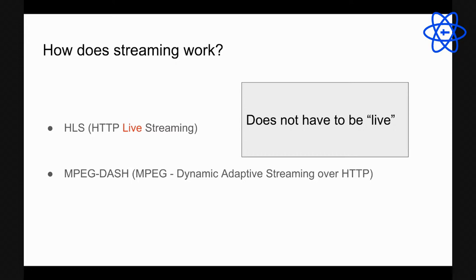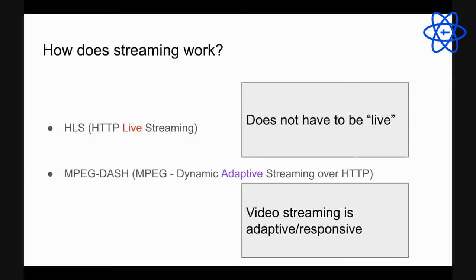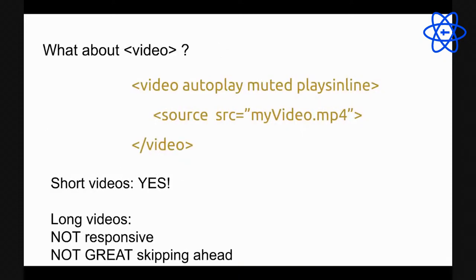Both streaming approaches are adaptive and responsive ways of delivering video, which is really important. A lot of us consume video on a giant 32-inch monitor, some on a laptop, some on a phone. We need the video to be adaptive so we're not delivering 4K video down to somebody's mobile phone.